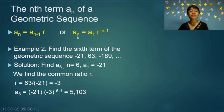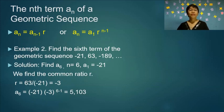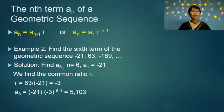Alternatively, if you are given the first term a₁ and the common ratio r, you can use the explicit formula. Example 2: Find the sixth term of the geometric sequence negative 21, 63, negative 189. The common ratio is 63 divided by negative 21, which equals negative 3. Using the formula with the first term and common ratio, the answer is 5103.